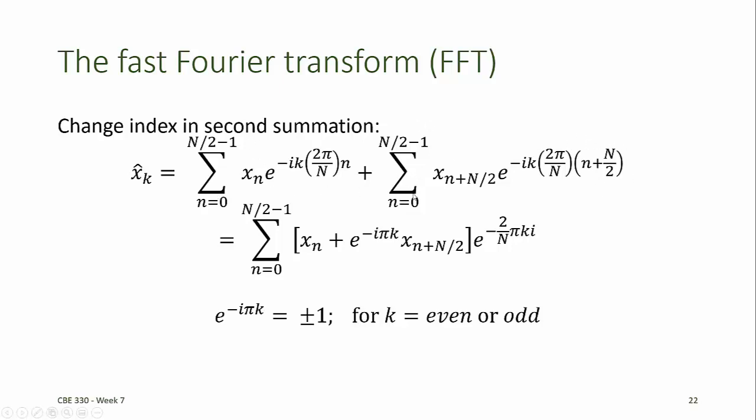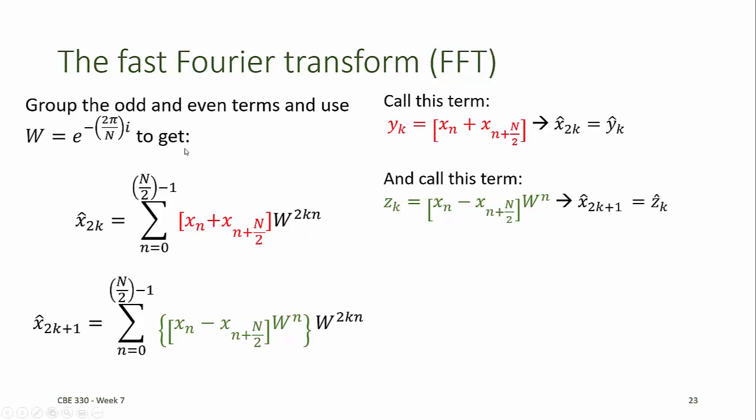Now that the summations are over the same index, they can be recombined, and we factor out the additional e to the minus i pi k term from the second summation, which just takes a value of plus or minus 1 depending on whether k is even or odd. So for all the even values of k, there is a plus sign in the summation, and for all the odd values of k, there is a minus sign in the summation.